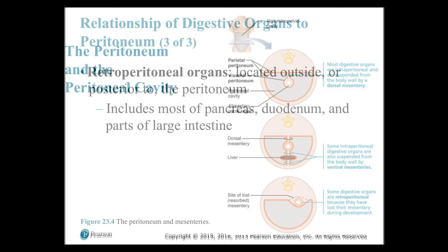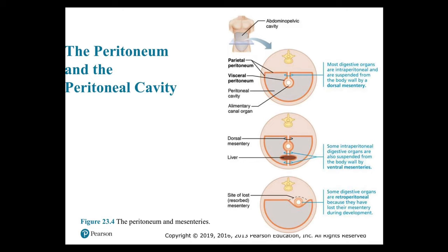Figure 23.4 shows the peritoneum and mesenteries. Looking at a cross-section of the abdominal pelvic cavity, notice the parietal peritoneum, the visceral peritoneum, and the peritoneal cavity. Most digestive organs are intraperitoneal and are suspended from the body wall by a dorsal mesentery. Some digestive organs are retroperitoneal because they have lost their mesentery during development.